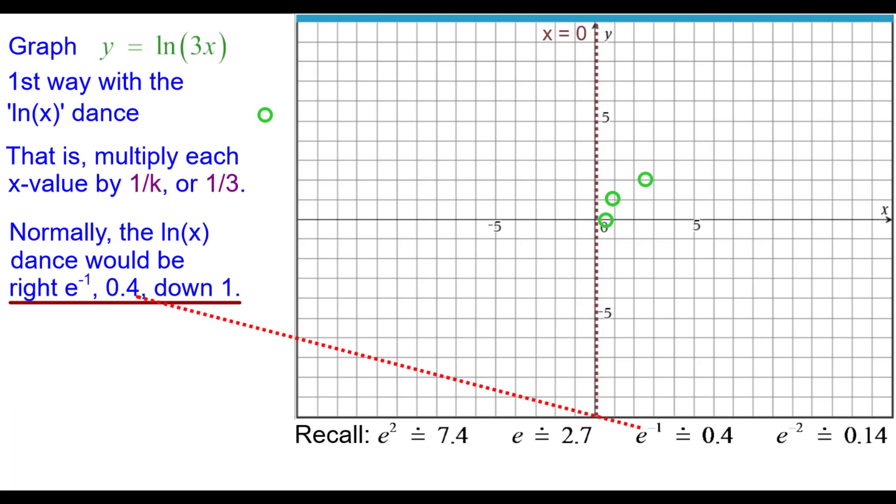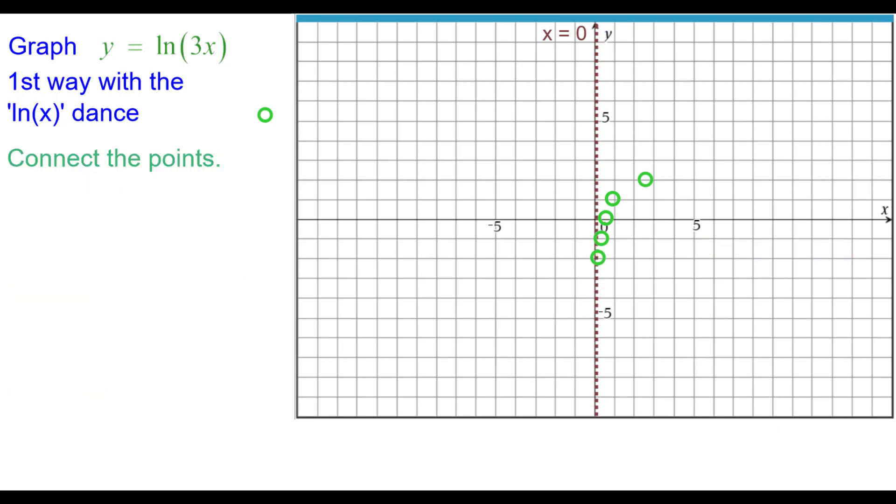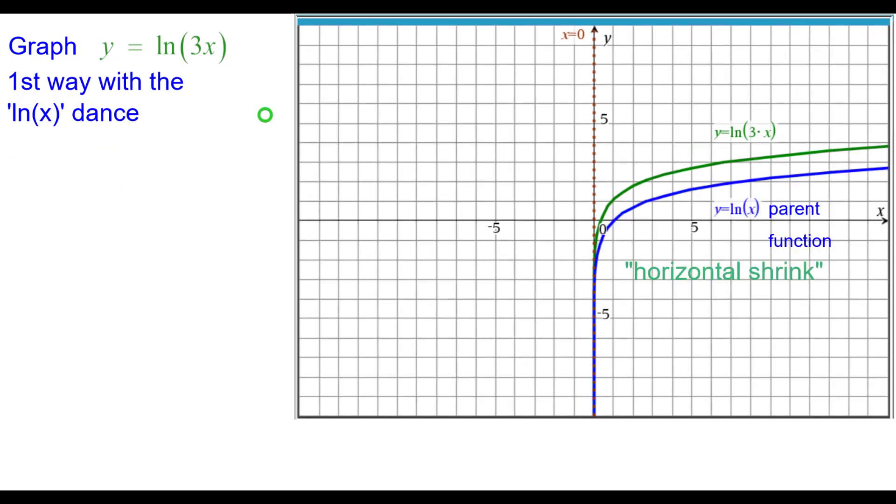Right e to the negative 1 down 1 but we have to again take a third of that so it's about 0.13 to the right down 1. And then finally right e to the negative 2 down 2 but a third of that will be about 0.05 down 2. Connect the points and we'll compare that to the natural log parent function and it is a horizontal shrink.